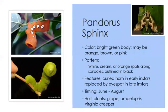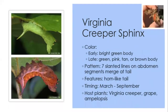The Pandora sphinx moth caterpillar can vary in color from bright green to orange, brown, or even pink. There are large spots around the spiracles that can be white, cream, or orange, outlined in black. Early instars have a curled tail horn, and in later instars that tail disappears and is replaced by an eye spot. June through August, you can find this caterpillar on grape and Virginia creeper. Another sphinx moth found on the same plants is the Virginia creeper sphinx — bright green in early instars, changing to pink, tan, or brown later — with seven faint slanted lines on the abdomen merging into a stripe at the horn-like tail. March through September on the same plants.